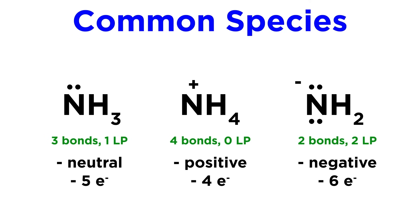Nitrogen has five valence electrons, and here we see contributions of five, four, and six. That means we have neutral nitrogen, positively charged nitrogen, and negatively charged nitrogen.